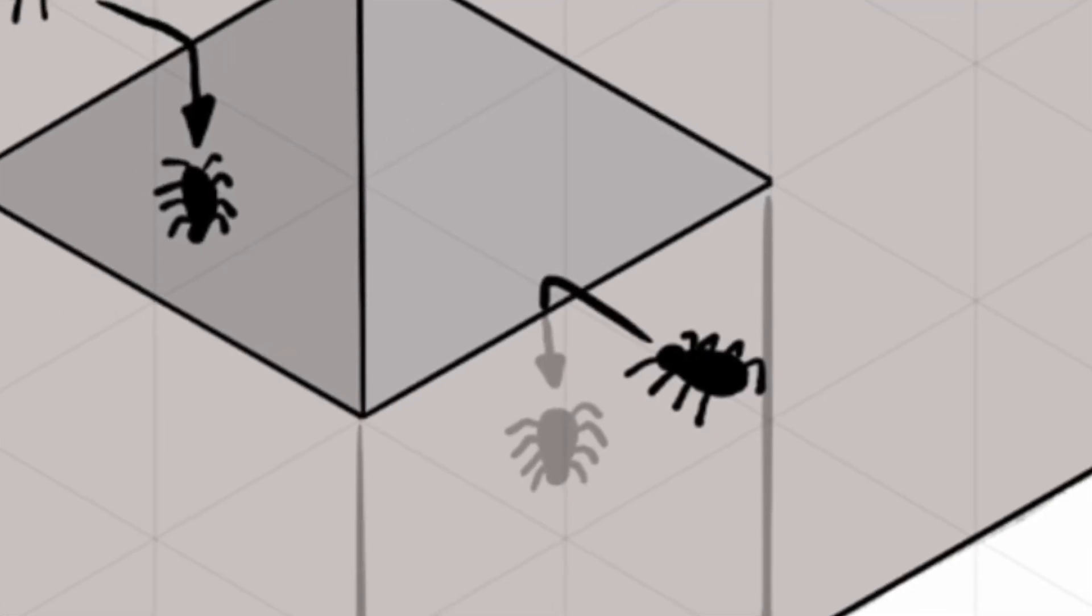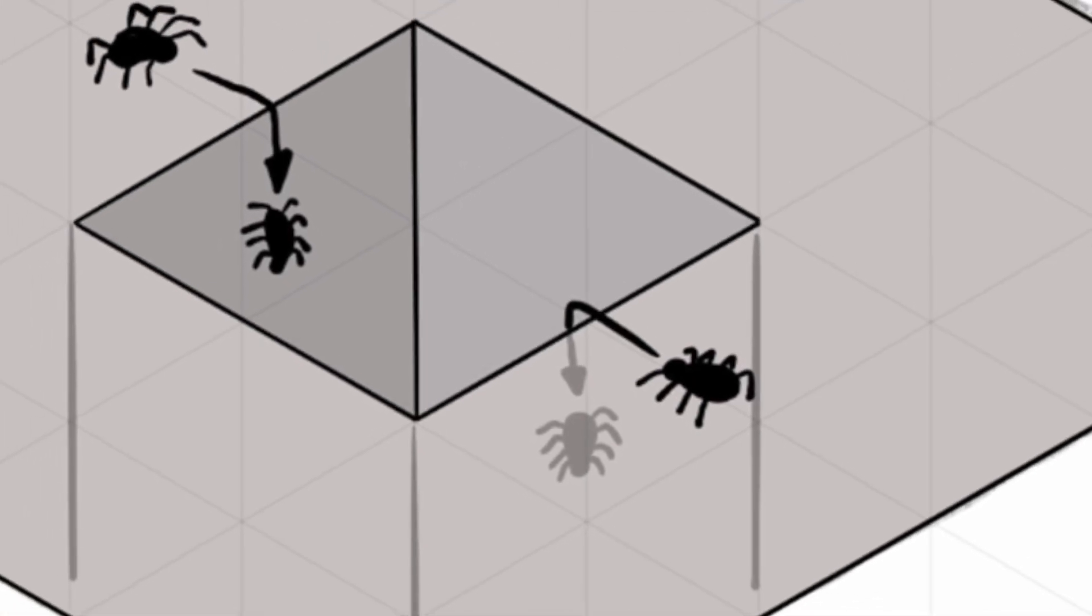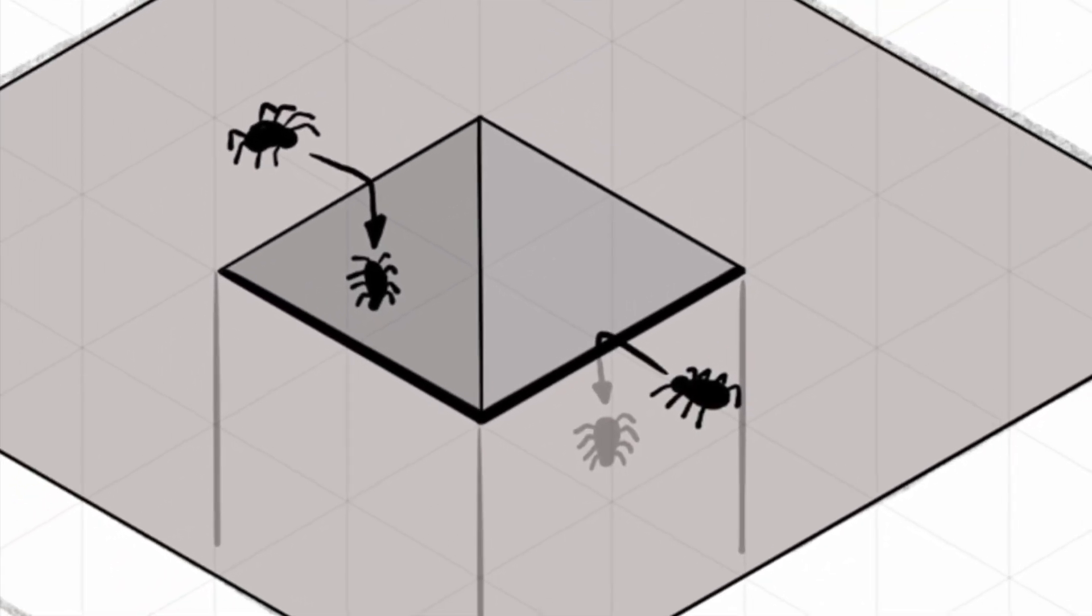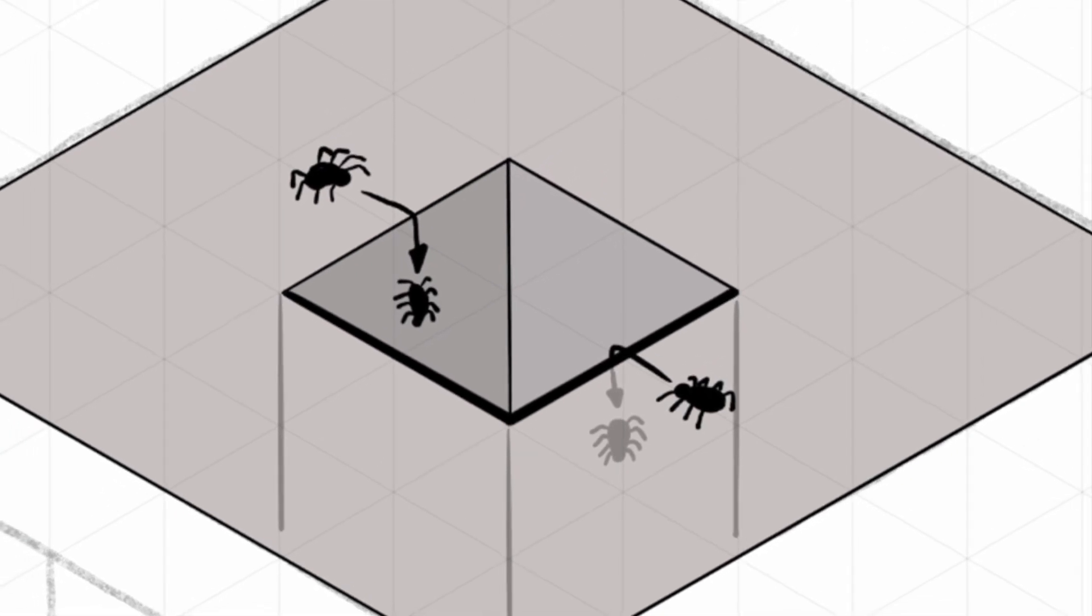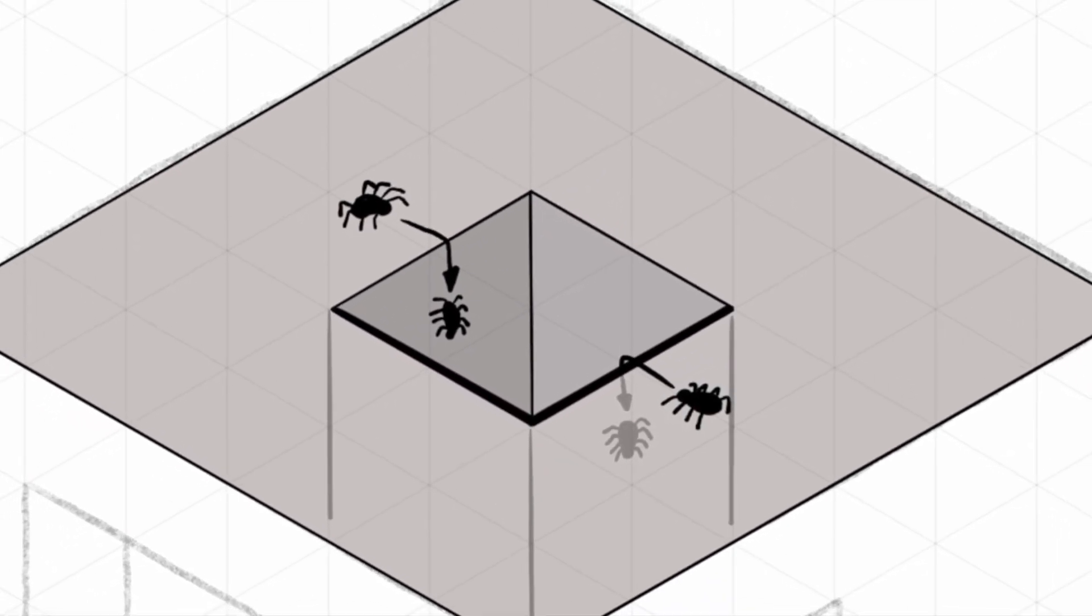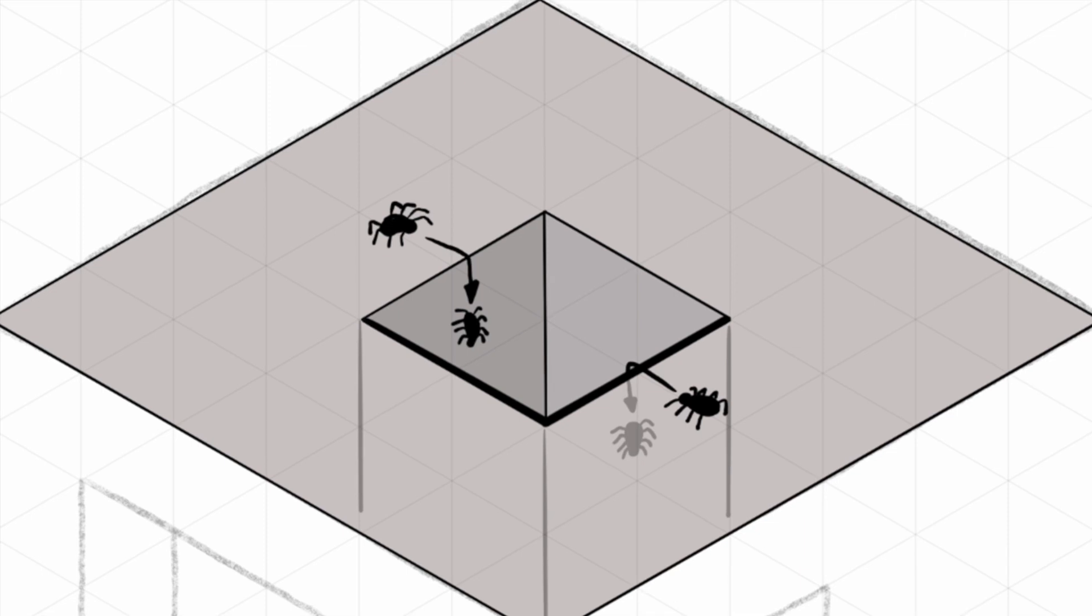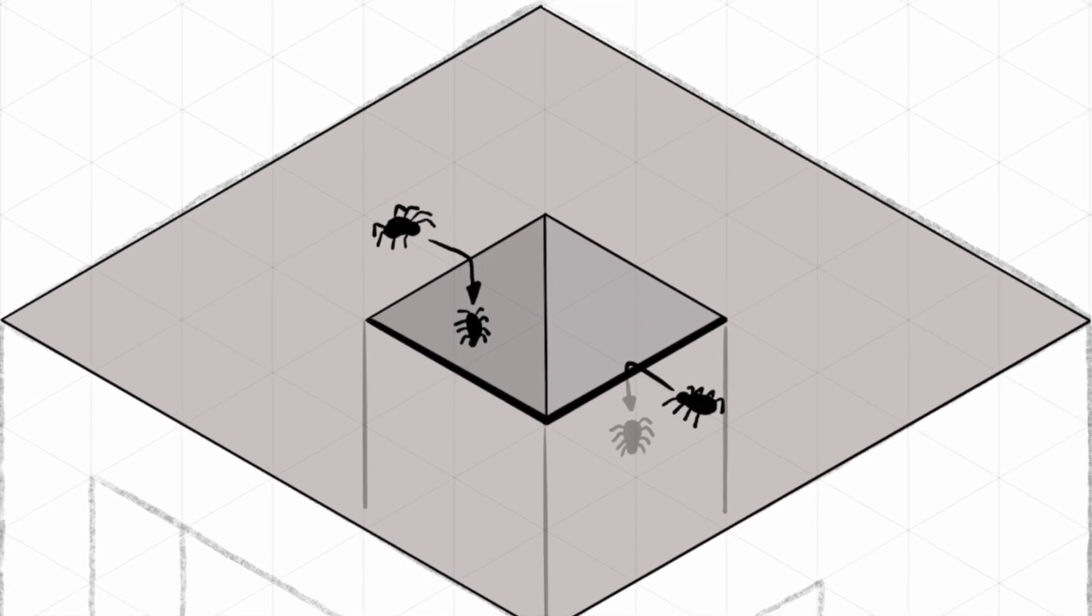However, if the spider crosses onto a hidden face out of sight, the edge it crossed becomes a thicker line. This analogy helps to differentiate between visible and hidden edges, adding depth and clarity to your sketch.